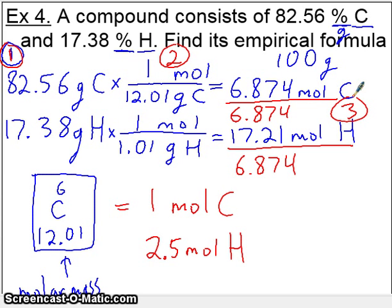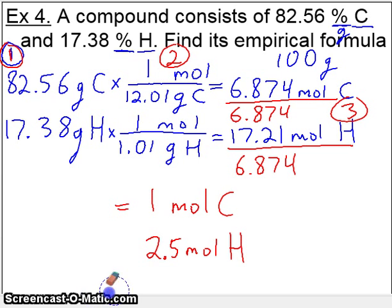The last step is multiply to the whole. What this means is you would multiply both of these numbers by some kind of number until both of these become whole numbers. We have a compound made of carbon and hydrogen. What we're looking for are the subscripts, these numbers. How many carbons for how many hydrogens.